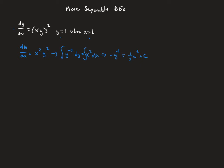At any point in time we can use the initial condition, but I'm going to wait a little bit. Let's see if we can multiply through by negative 1 first. I'm going to rewrite y to the negative 1 as 1 over y. On the right side, when we multiply through by negative 1, that's going to be negative one-third x³. The plus c we can still leave as plus c — it's still a constant we'll determine later.